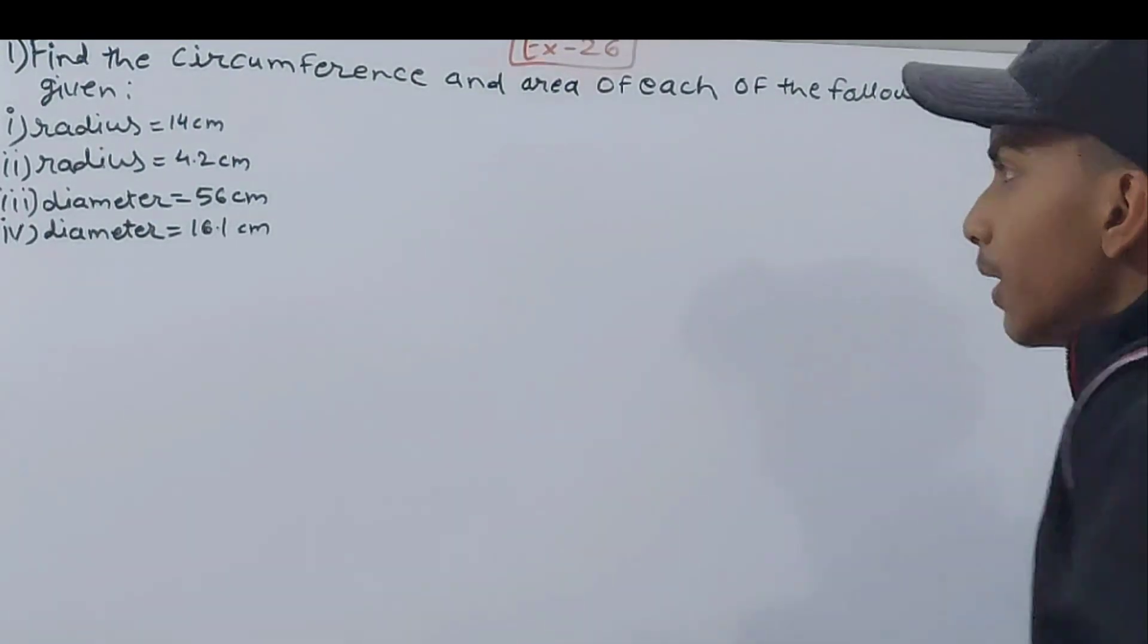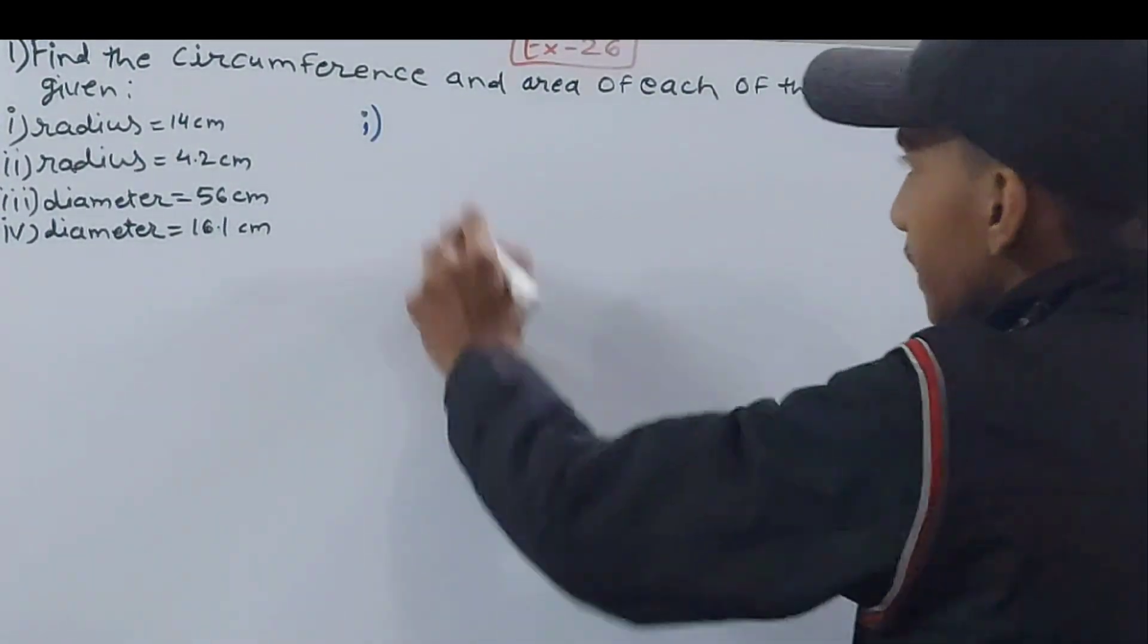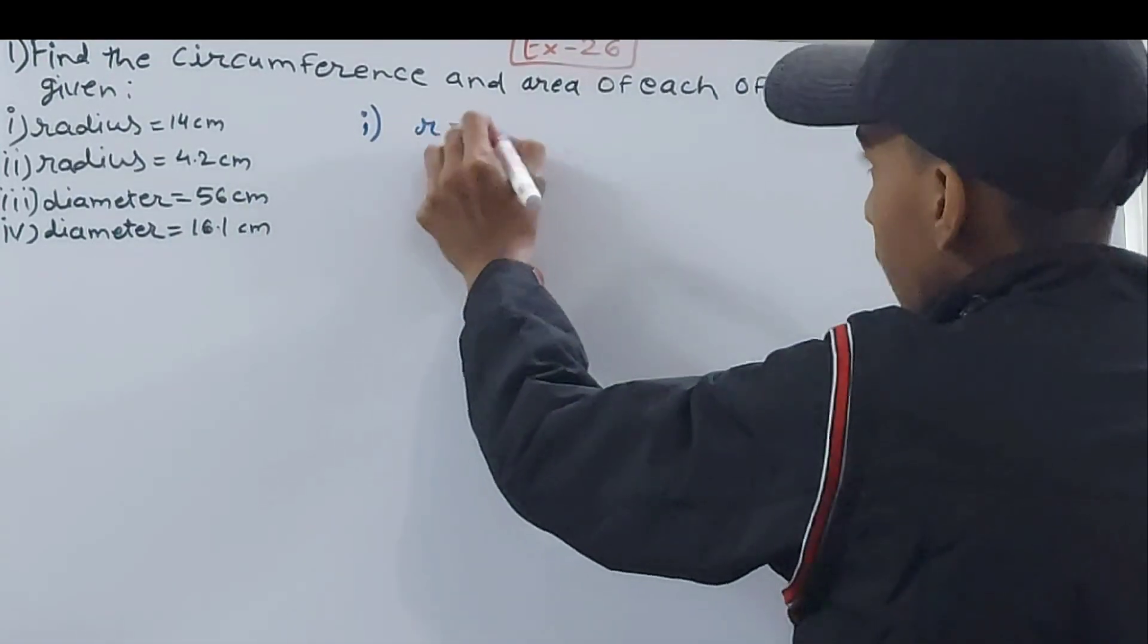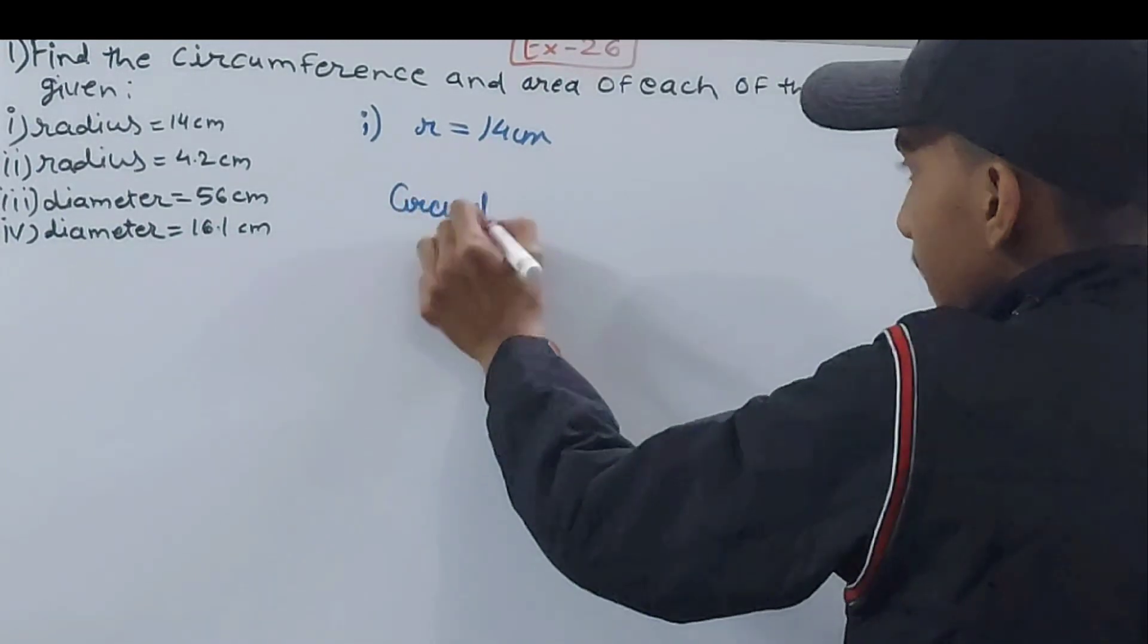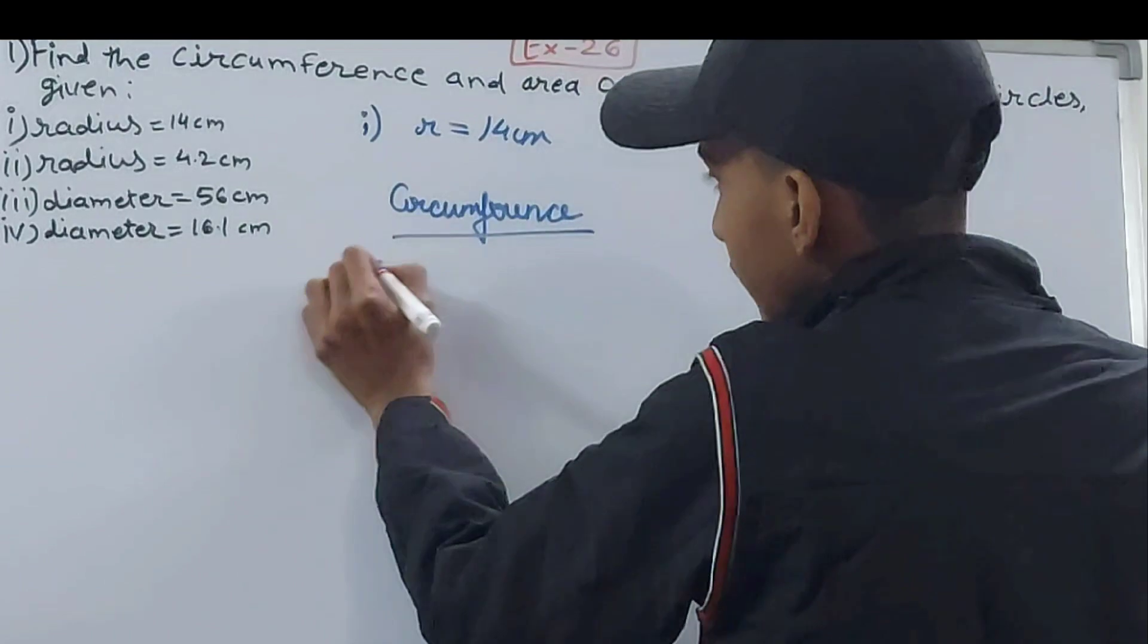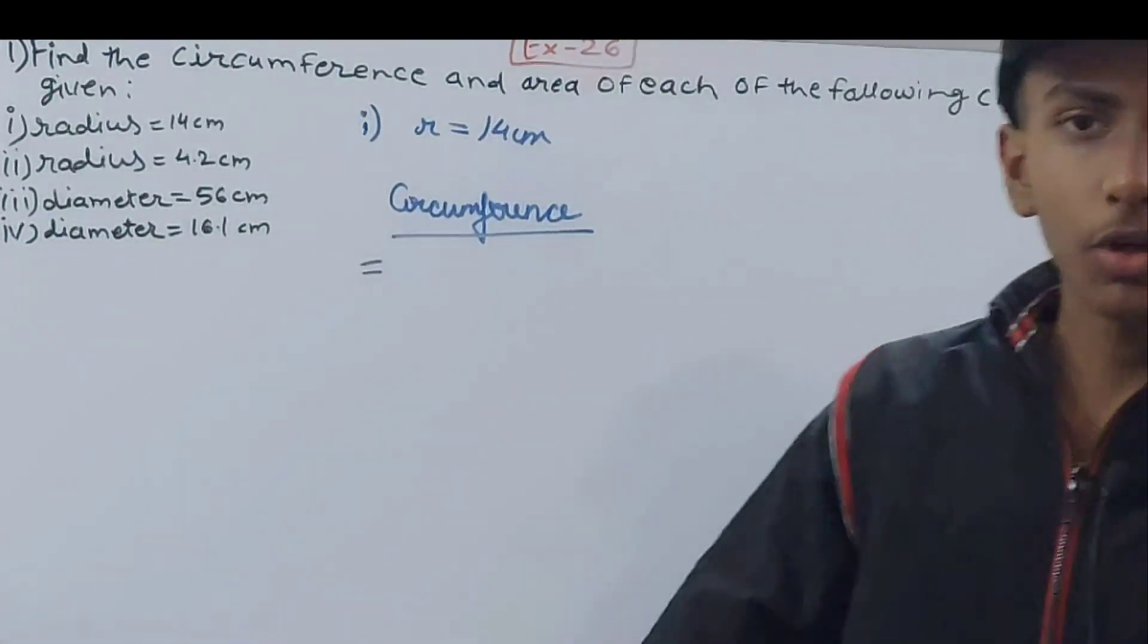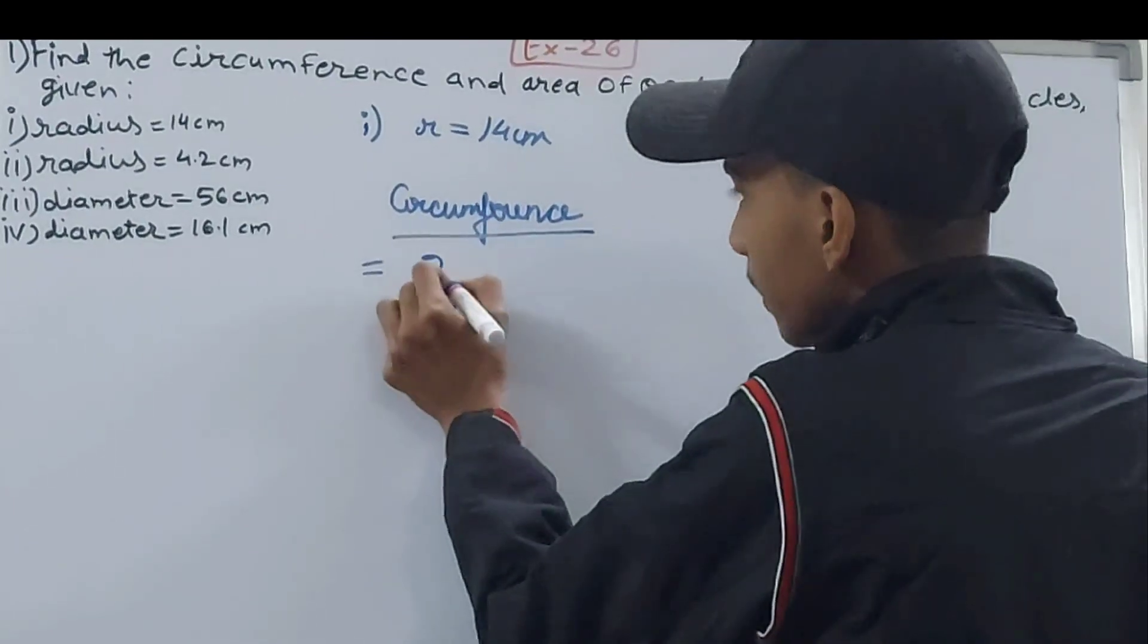In the first case we have radius as 14 centimeters. We will calculate the circumference first. The formula for the circumference of the circle is 2πr. When we have the radius we will be using this formula.